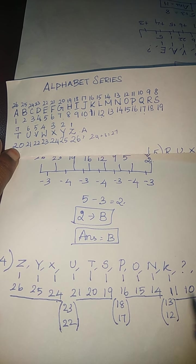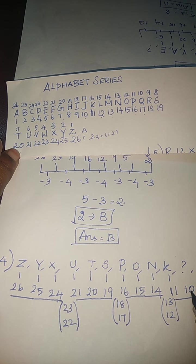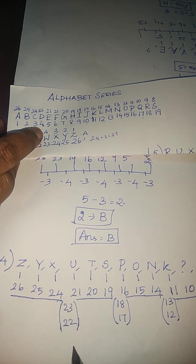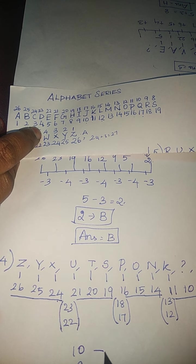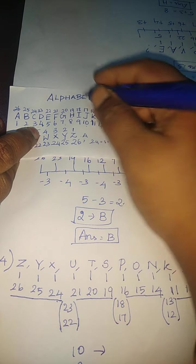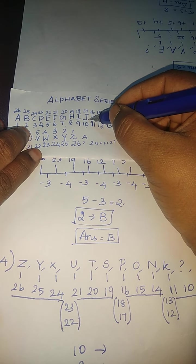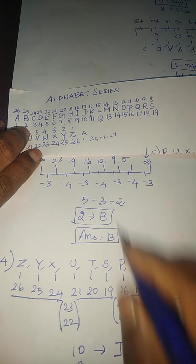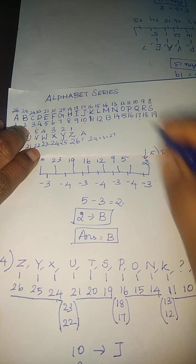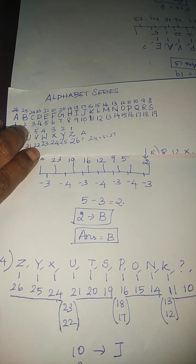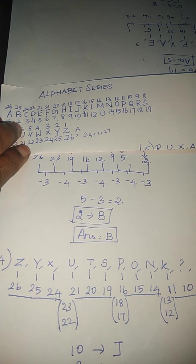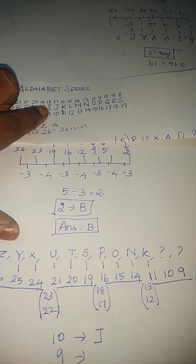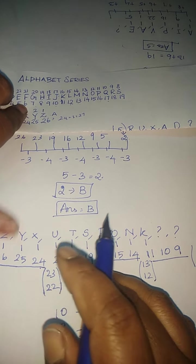We have to find out. So, what's the number 10 and 9 denotes in alphabetical series? What's the 10th number denotes? It's J. And the 9th number in alphabetical series is I.